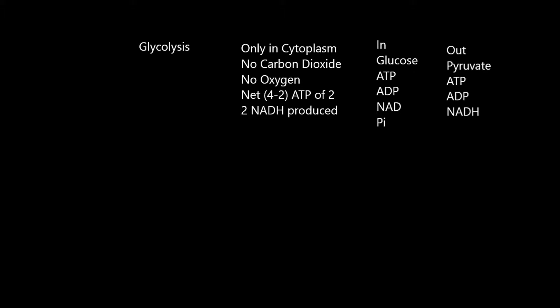A coenzyme carrier goes in, which is NAD, and gets reduced because it's picking up electrons and hydrogens and becomes NADH. Additionally, you need some inorganic phosphate.